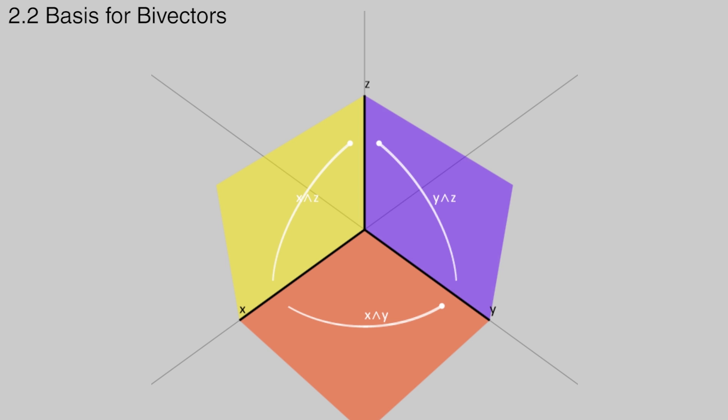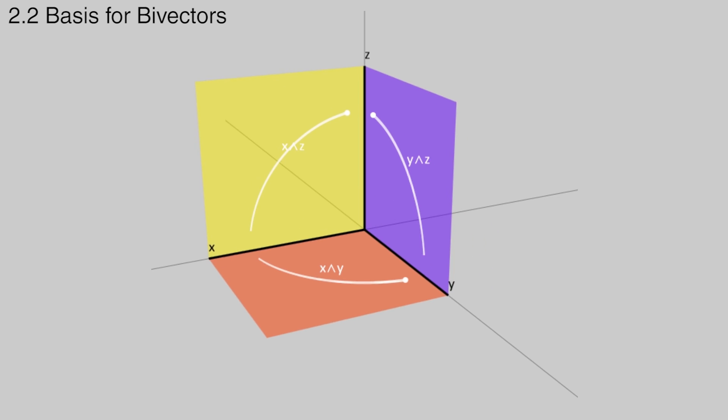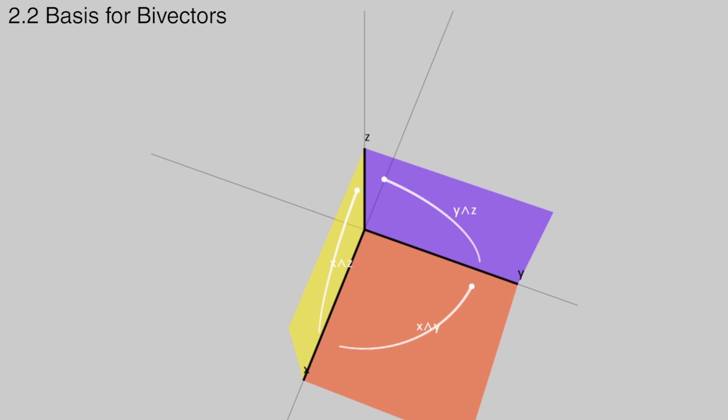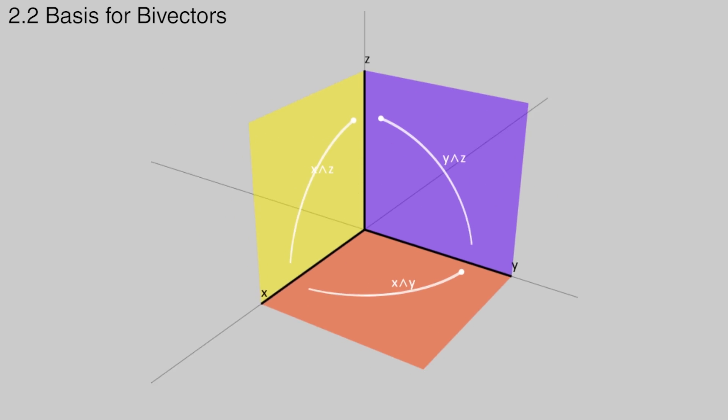Bivectors have components just like vectors, but they are defined in terms of basis planes instead of basis lines like vectors. The three orthogonal basis planes are xy, xz, and yz.